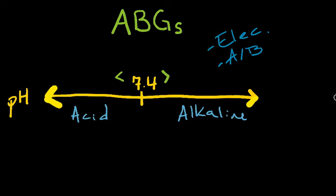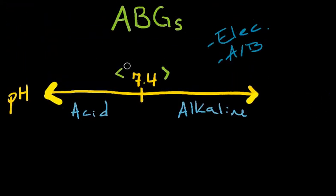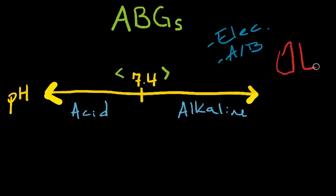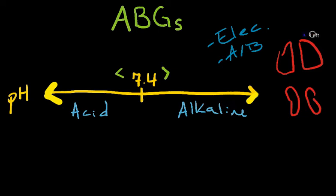There are four main components to ABGs I want to cover: pH, the partial pressure of carbon dioxide, the bicarbonate level, and the partial pressure of oxygen. To understand what ABGs are measuring, you need to know that your body has electrolytes, acids, and bases that all need to be balanced. That electrolyte and acid-base balance is controlled by two body systems: the lungs and the kidneys — the respiratory system and the renal or metabolic system.